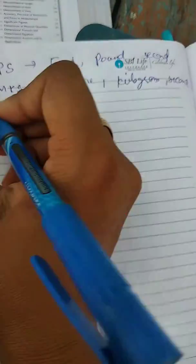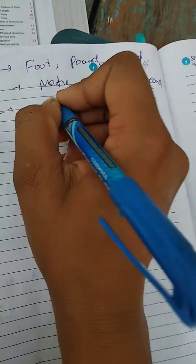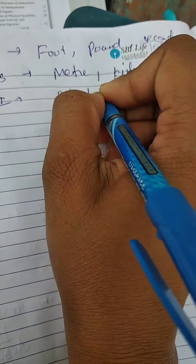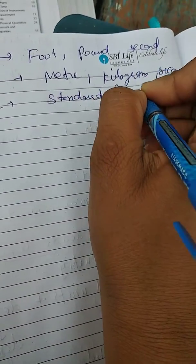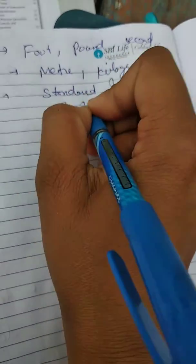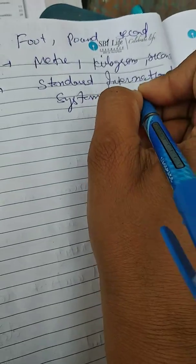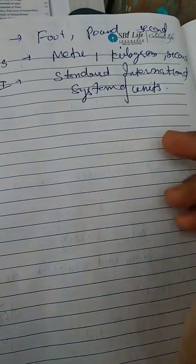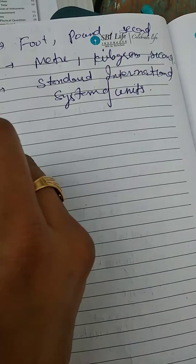Now, fourth one is SI. It is called Standard International System of Units. In this there are seven units.